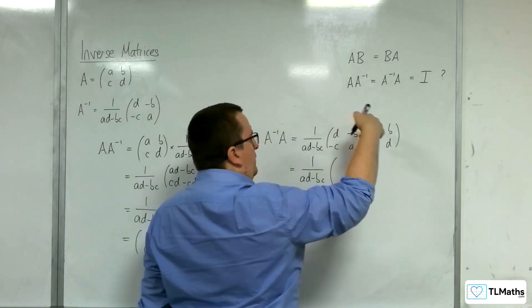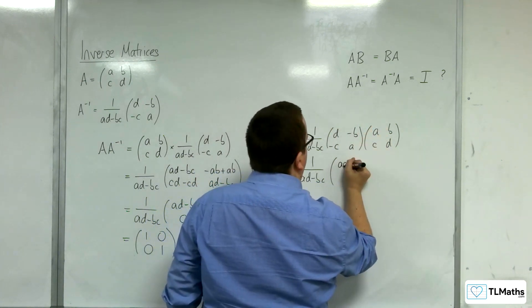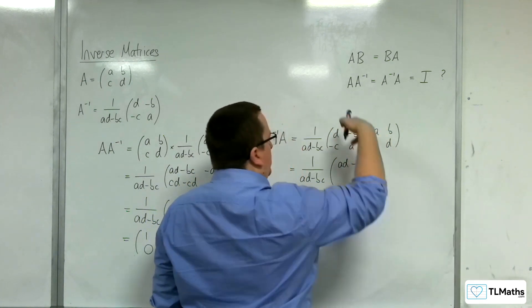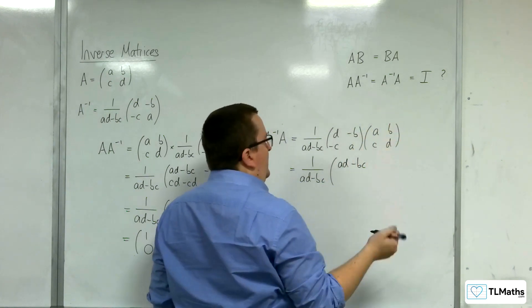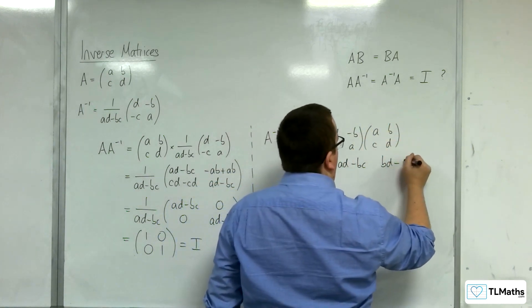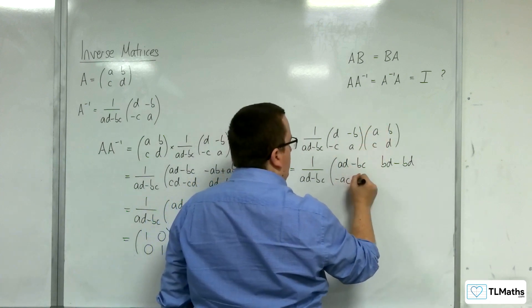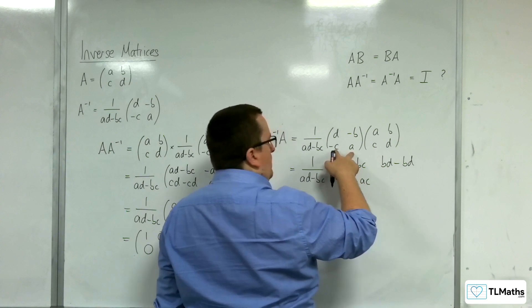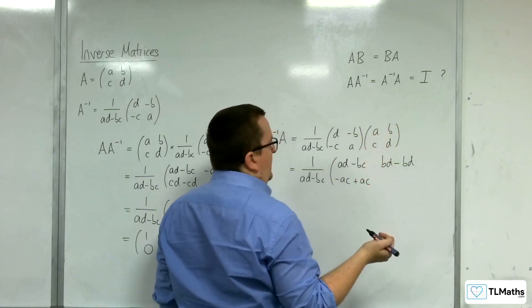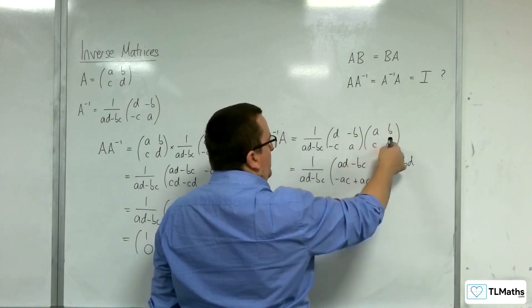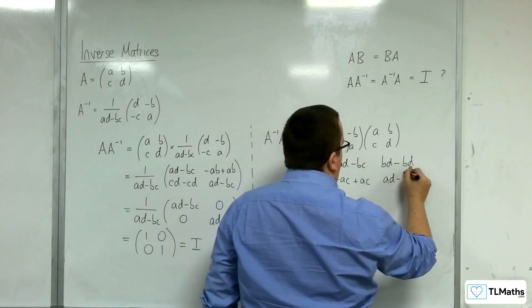We've got D, -B times by A, B. So AD - BC. We've got D, -B multiplying with B, D, so BD - BD. -C, A multiplying with A, C, so -AC + AC. And -C, A multiplying with B, D, so I get -BC and AD, which is AD - BC.